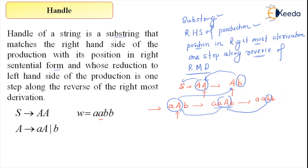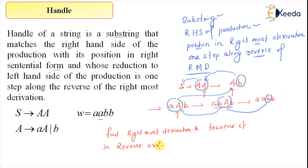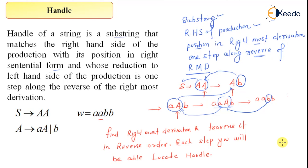So to locate the handle, what you need to do is: find the rightmost derivation, and traverse it in reverse order. At each step you will be able to locate the handle. That is the idea of the handle, and bottom-up parsing is solely based on this computation — finding the substring on which it can perform the reduction. That's all for this session, thank you.